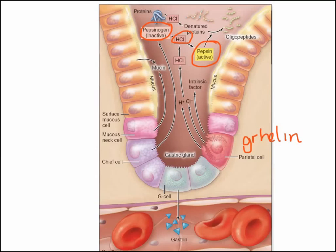Finally, we have the G cells, which are involved in the secretion of gastrin into the blood. Once gastrin moves into the blood, it stimulates motility of the stomach — floating around and stimulating the stomach to contract and grind up food — as well as stimulating other stomach secretions like pepsinogen and hydrochloric acid from the parietal and chief cells. Hopefully this clears up your understanding of the gastric pits, gastric glands, and all of the gastric secretions.